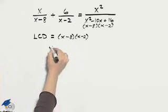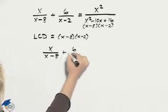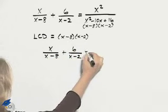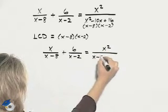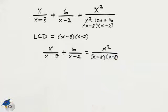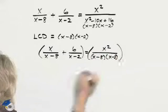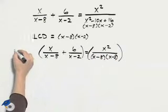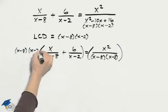I will now rewrite my equation as it is given. I will leave the denominator in the right-hand side factored, and I will multiply each side of the equation by my LCD, which is x minus 8 times x minus 2.